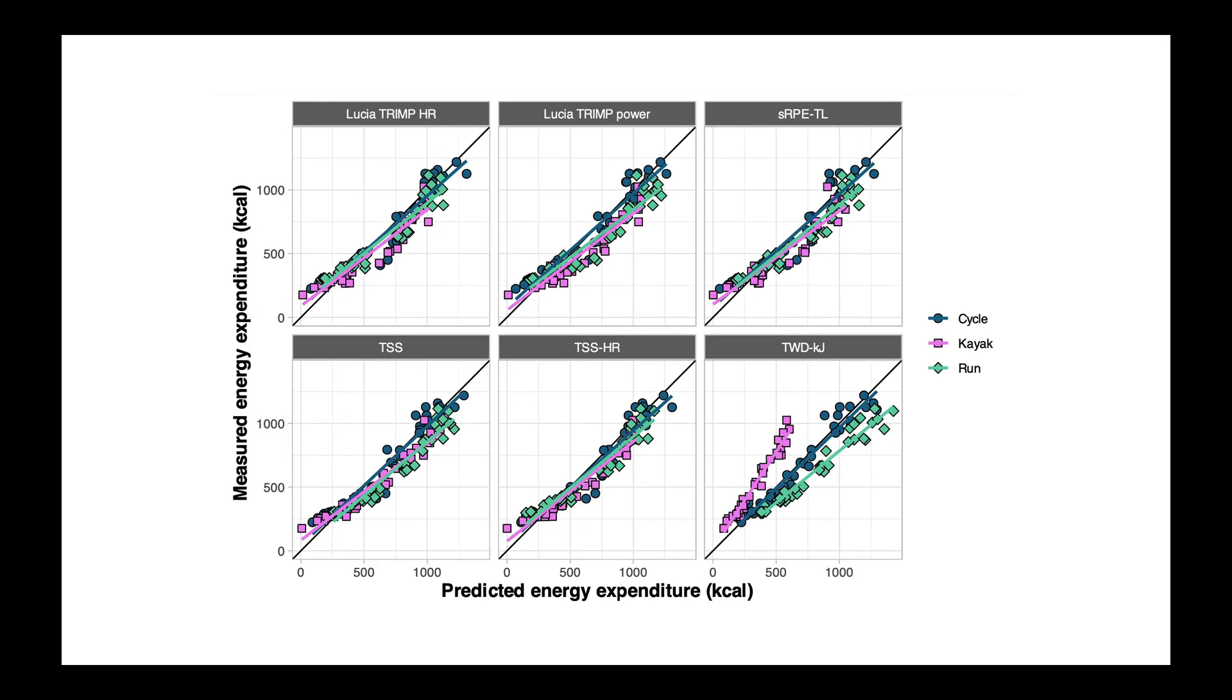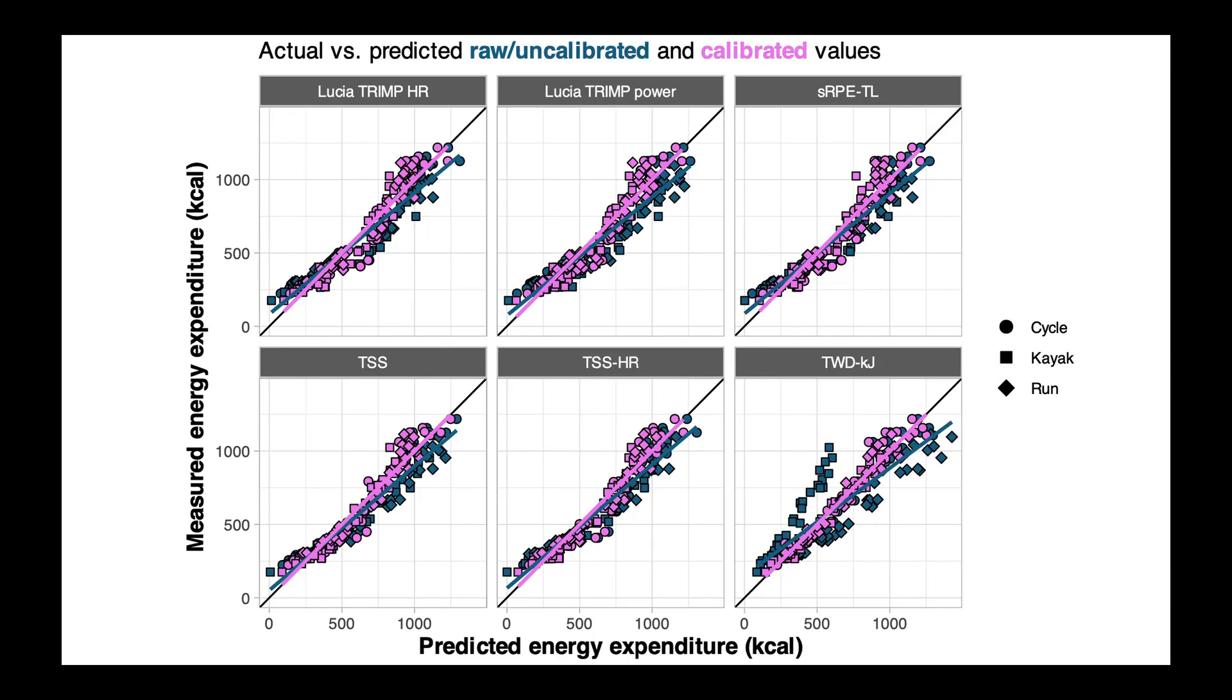These are the results for total energy expenditure, and we see a fairly similar story, where cycle data is the closest, and there are consistent offsets for kayak and run, particularly around total work done in the bottom right corner. The cool thing about that is we can do what's called a calibration adjustment. What that means is we fit a model that corrects the fitted line, and we get something like this, where the blue dots are now the unadjusted values and the pink dots are the adjusted one. So looking again at that bottom right corner, we can take those blue ones and tilt the line so that things are calibrated properly for each sport. So each sport and each training load metric has its own calibration adjustment, and we can more confidently apply these models across cycling, running, and kayaking.